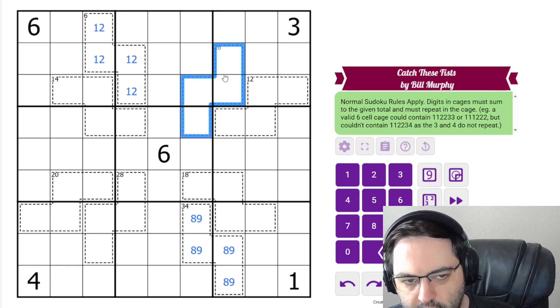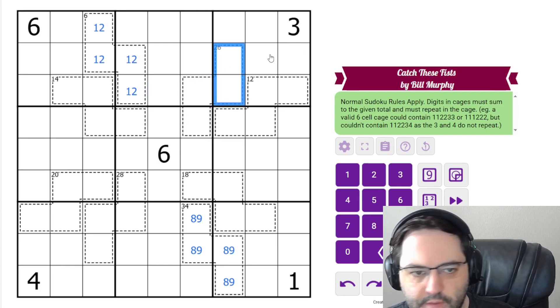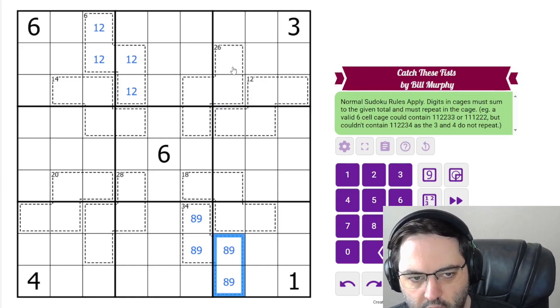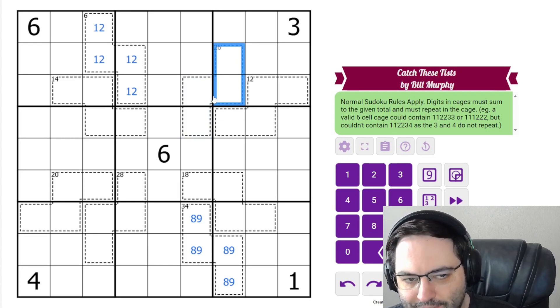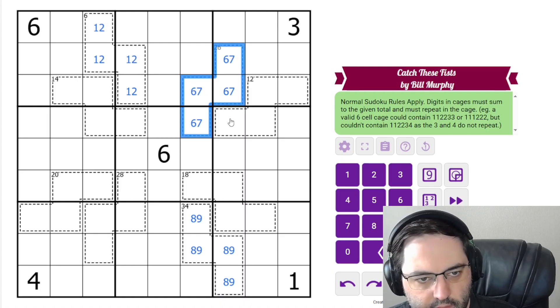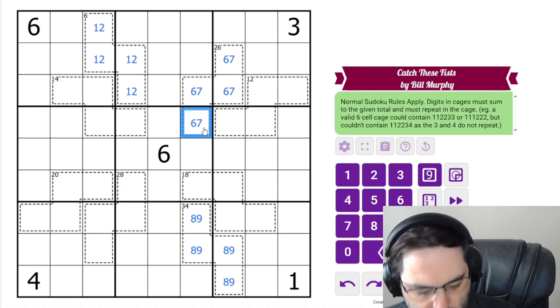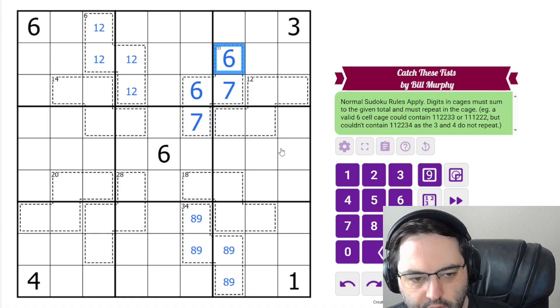So this 26, these digits must sum to 13. And we have an eight and a nine in the column. In fact, we have an eight and nine in this column as well. So the highest this can be is six seven, and that does sum to 26. The six here resolves the order of those.